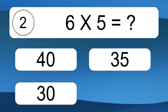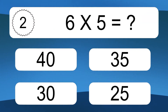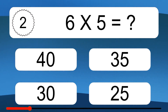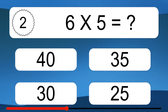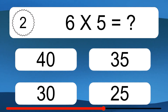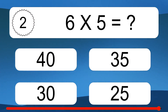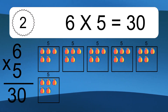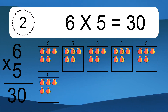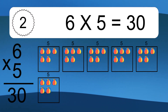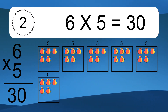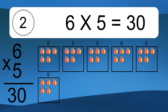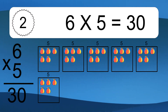6 times 5 equals what? 6 times 5 equals 30. We have 6 boxes, and each box has 5 colorful balls inside. If you count all the balls in all the boxes together, you will have 6 times 5 balls. This equals 30 balls.